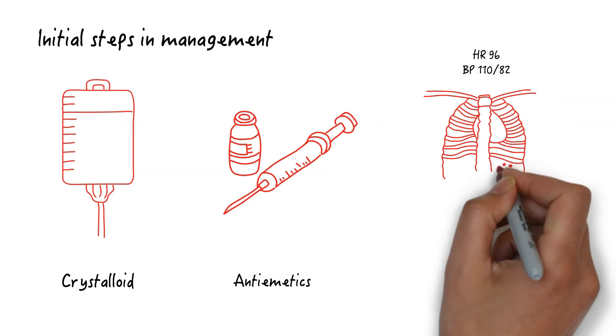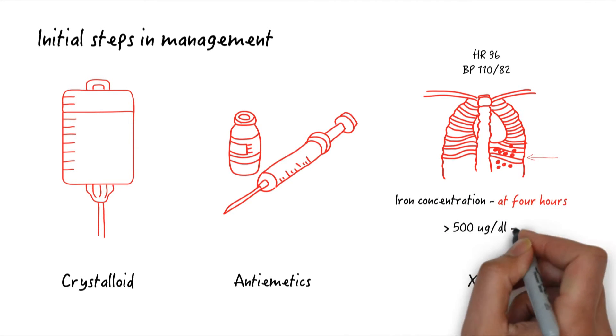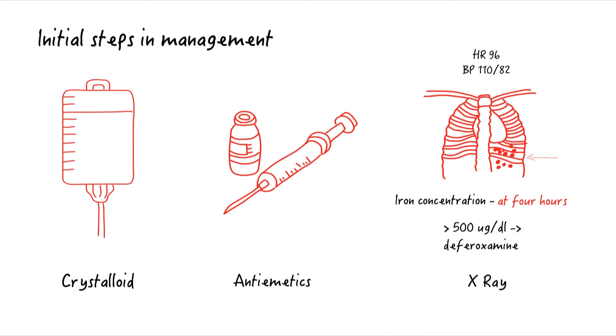You can consider obtaining a KUB since iron tablets can be radio opaque. Sending an iron concentration may help management. While practice patterns vary, in general for iron concentrations over 500 micrograms per deciliter, deferoxamine chelation is indicated. Note that a 4-hour iron level will give you the steady state concentration, so a repeat iron concentration can be performed at 4 hours post ingestion. However, for the sick patient, don't wait 4 hours to obtain this laboratory test.